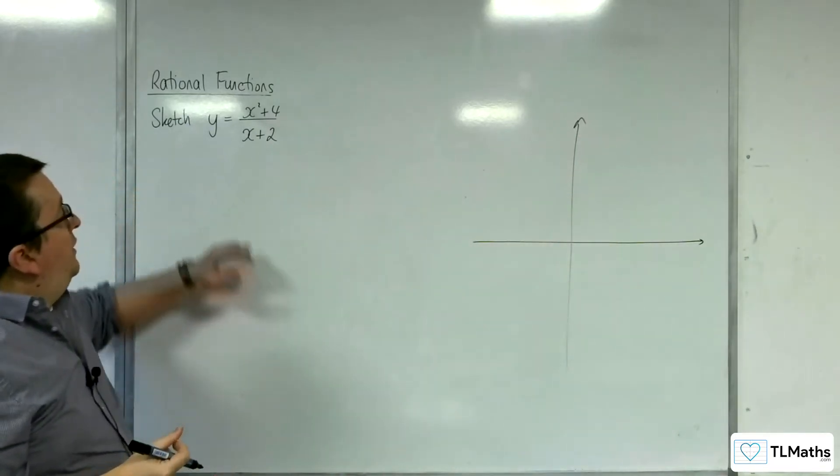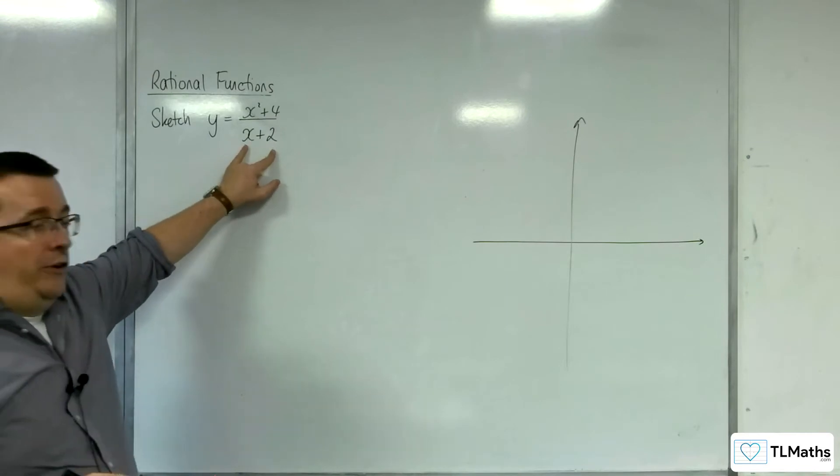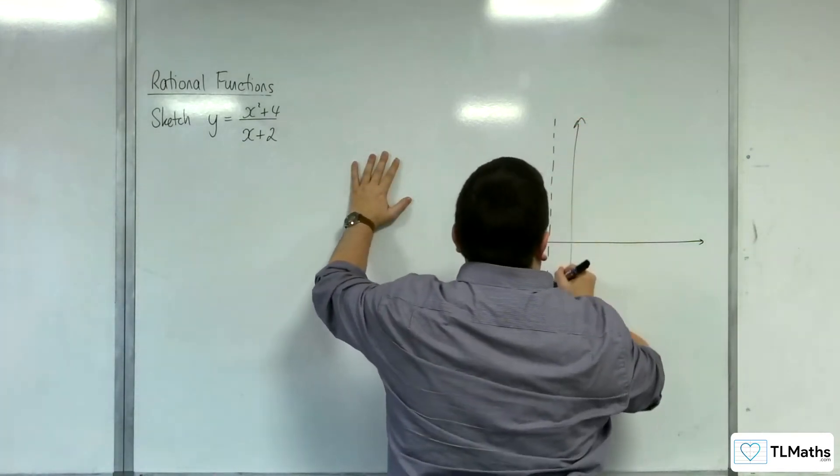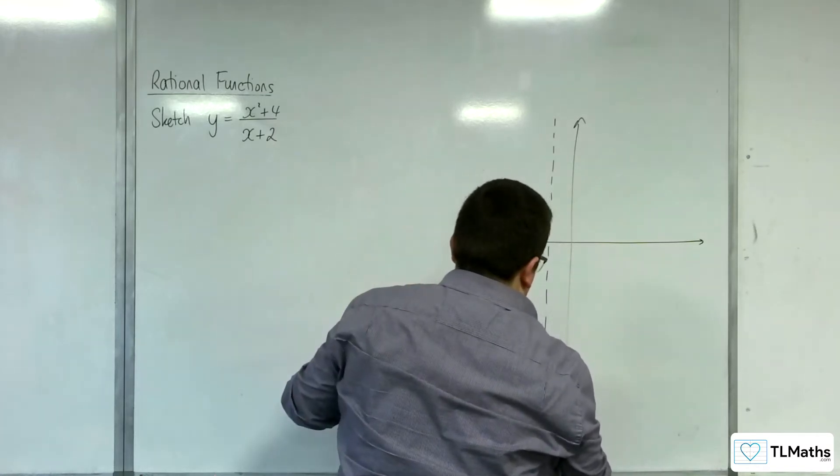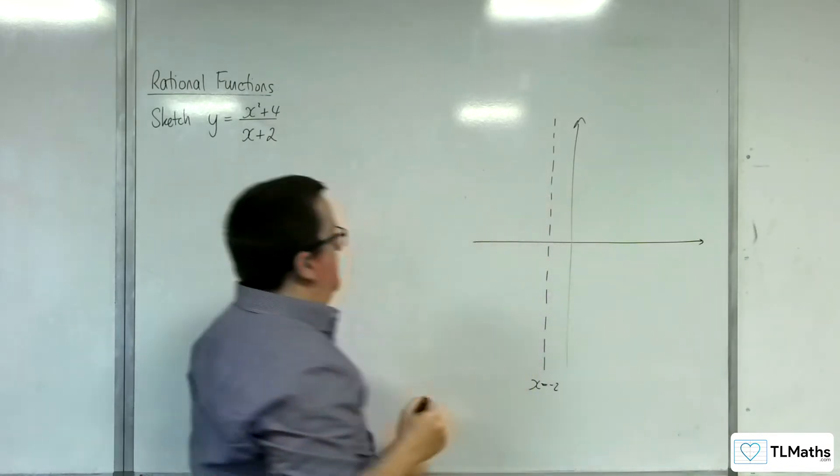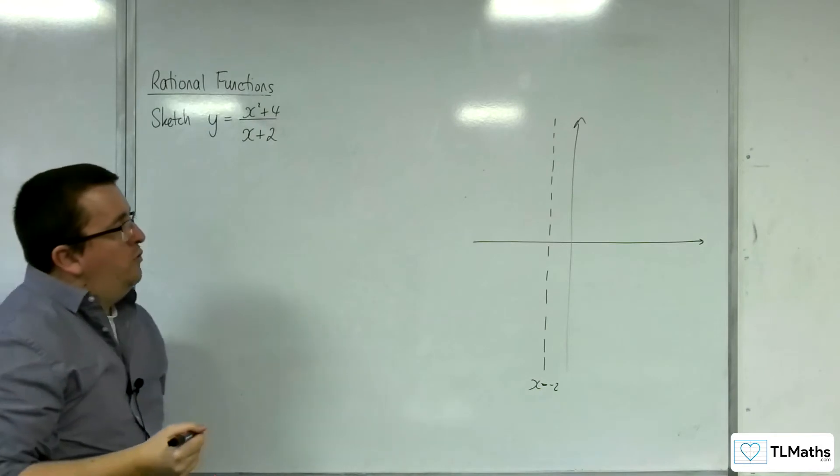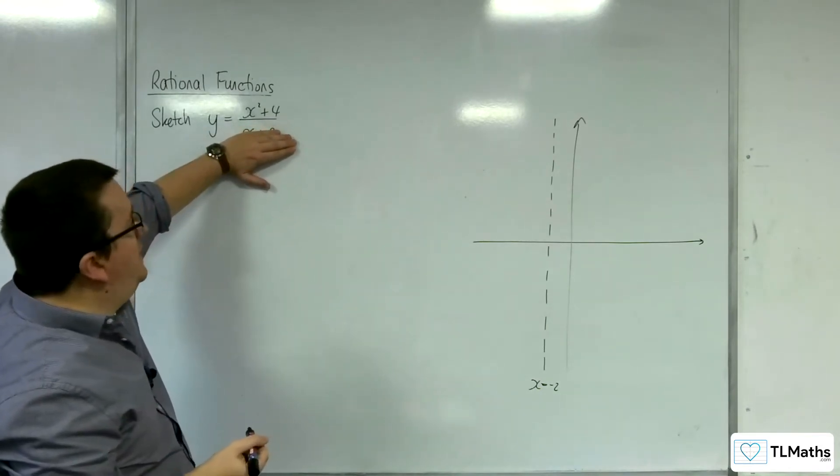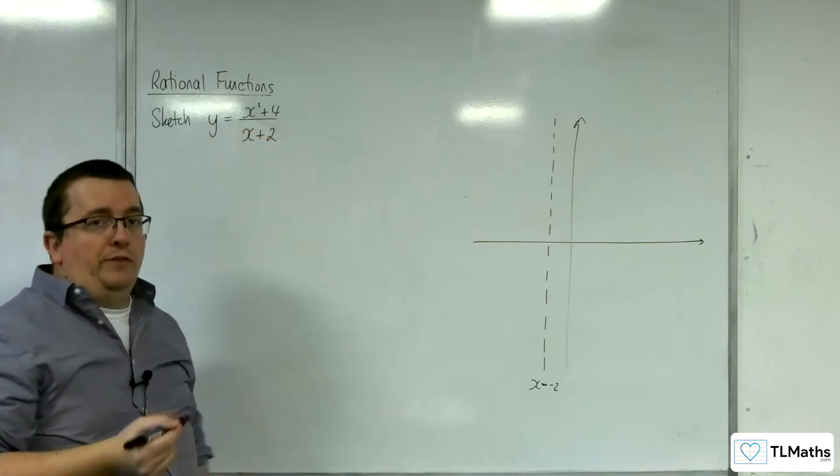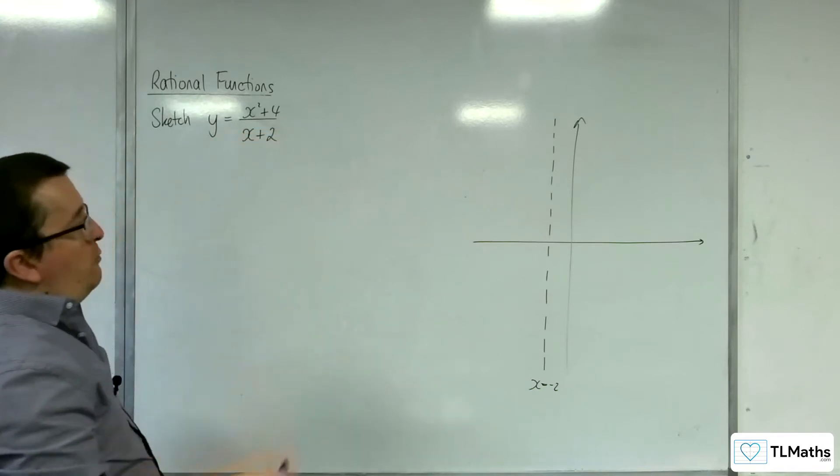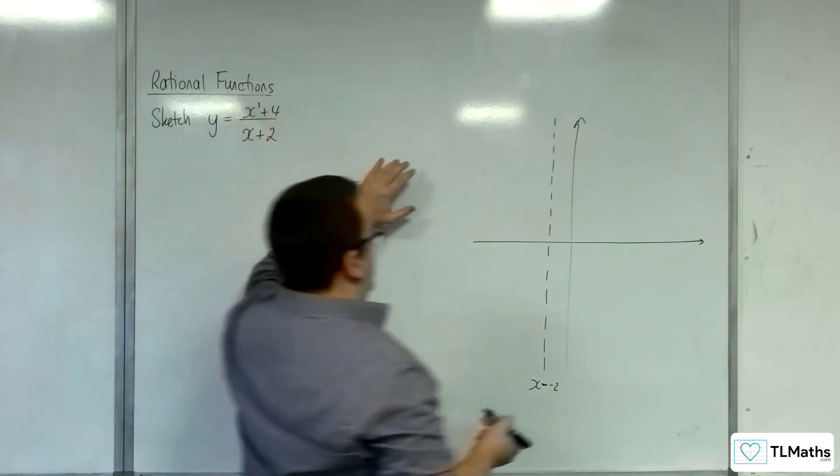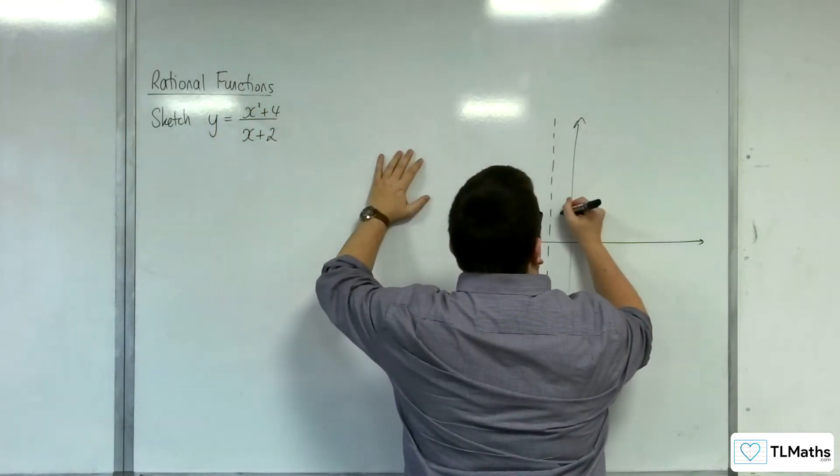Vertical asymptotes exist when the denominator is 0, that's at minus 2. So x equals minus 2 is a vertical asymptote. Now where does it cross the x-axis? That's when the numerator is 0. Well the numerator can never be 0, so we don't cross the x-axis. How about where it crosses the y-axis? That's when x is 0. So 4 over 2 is 2, so we're definitely crossing there.